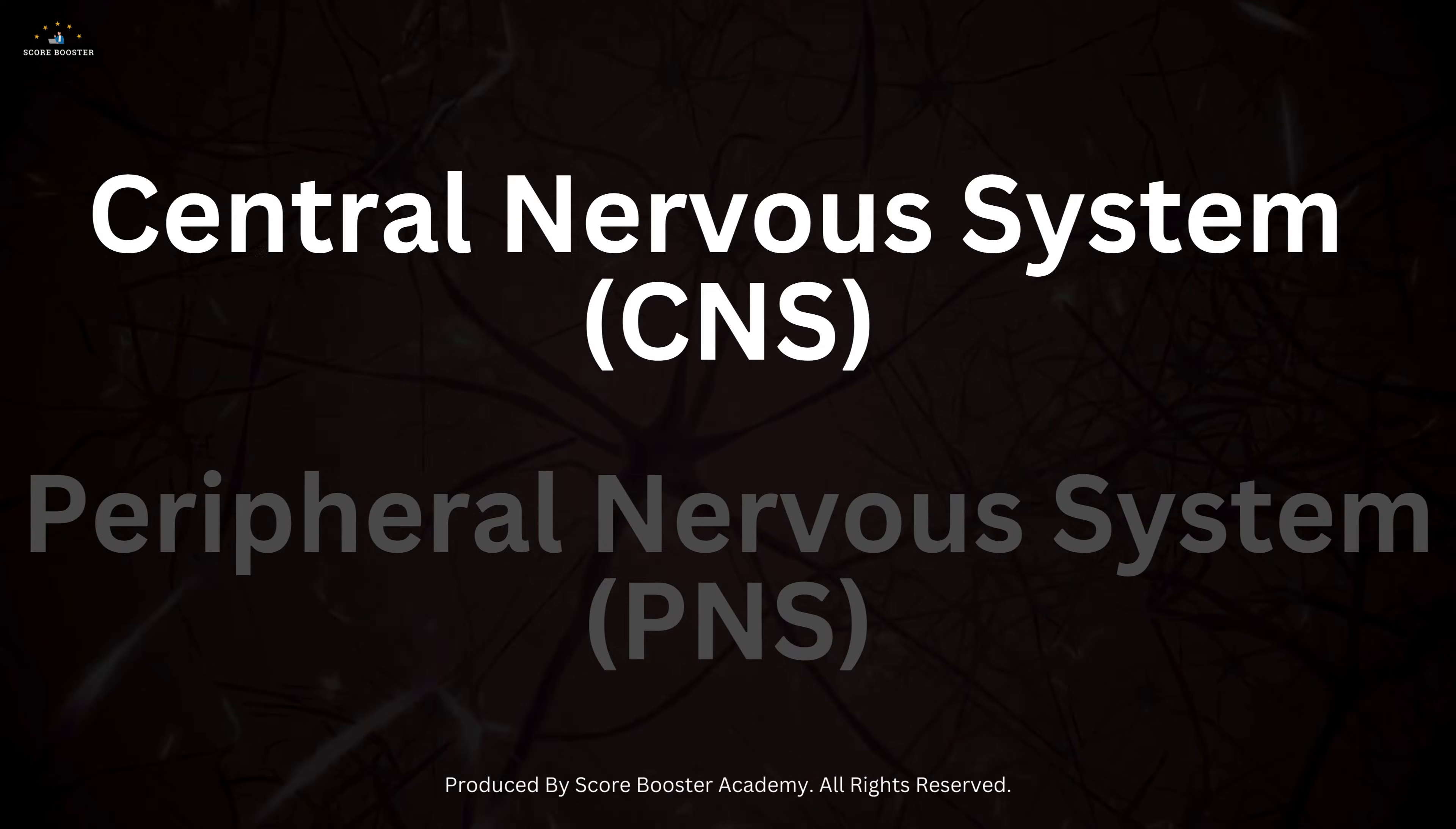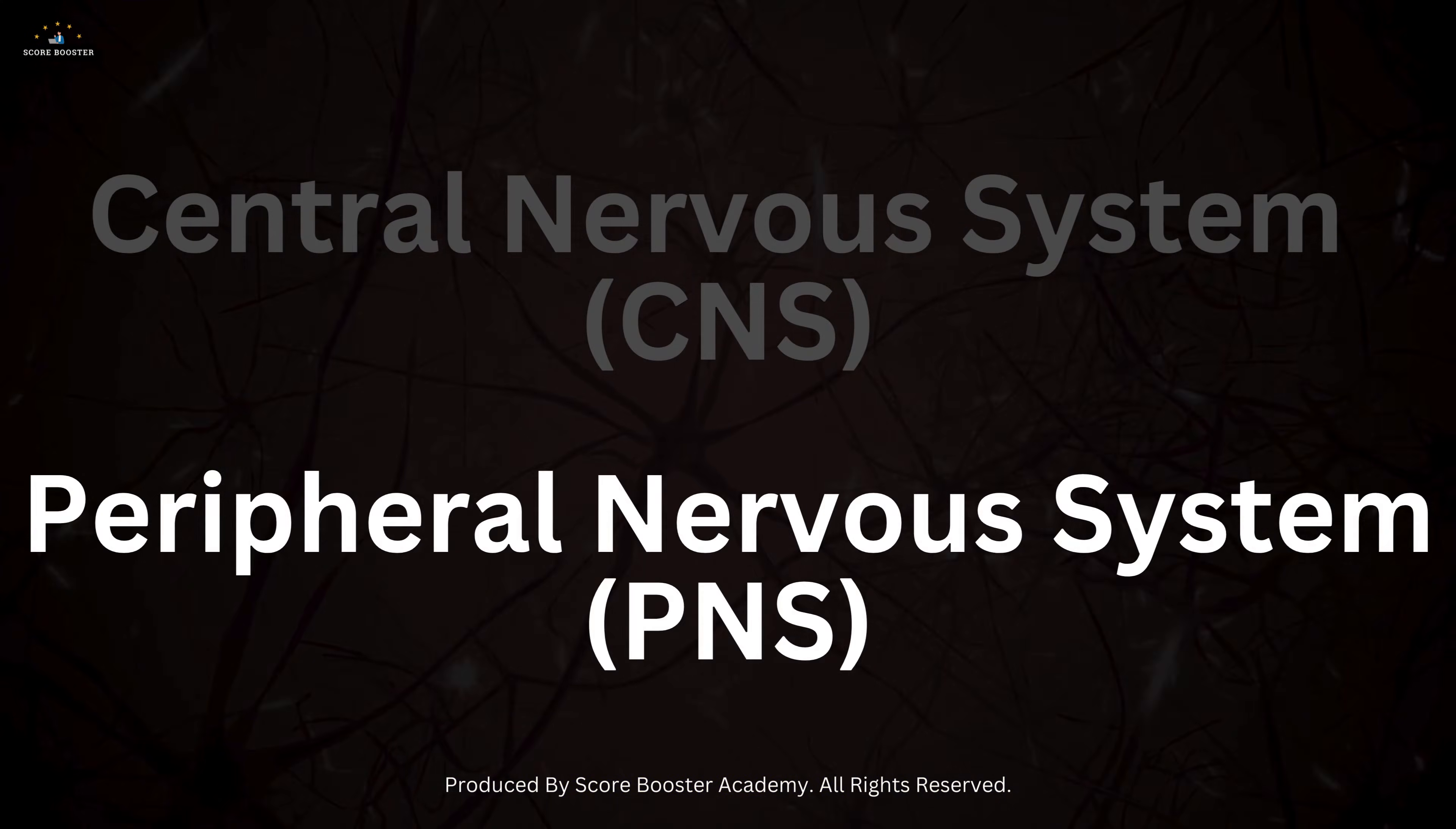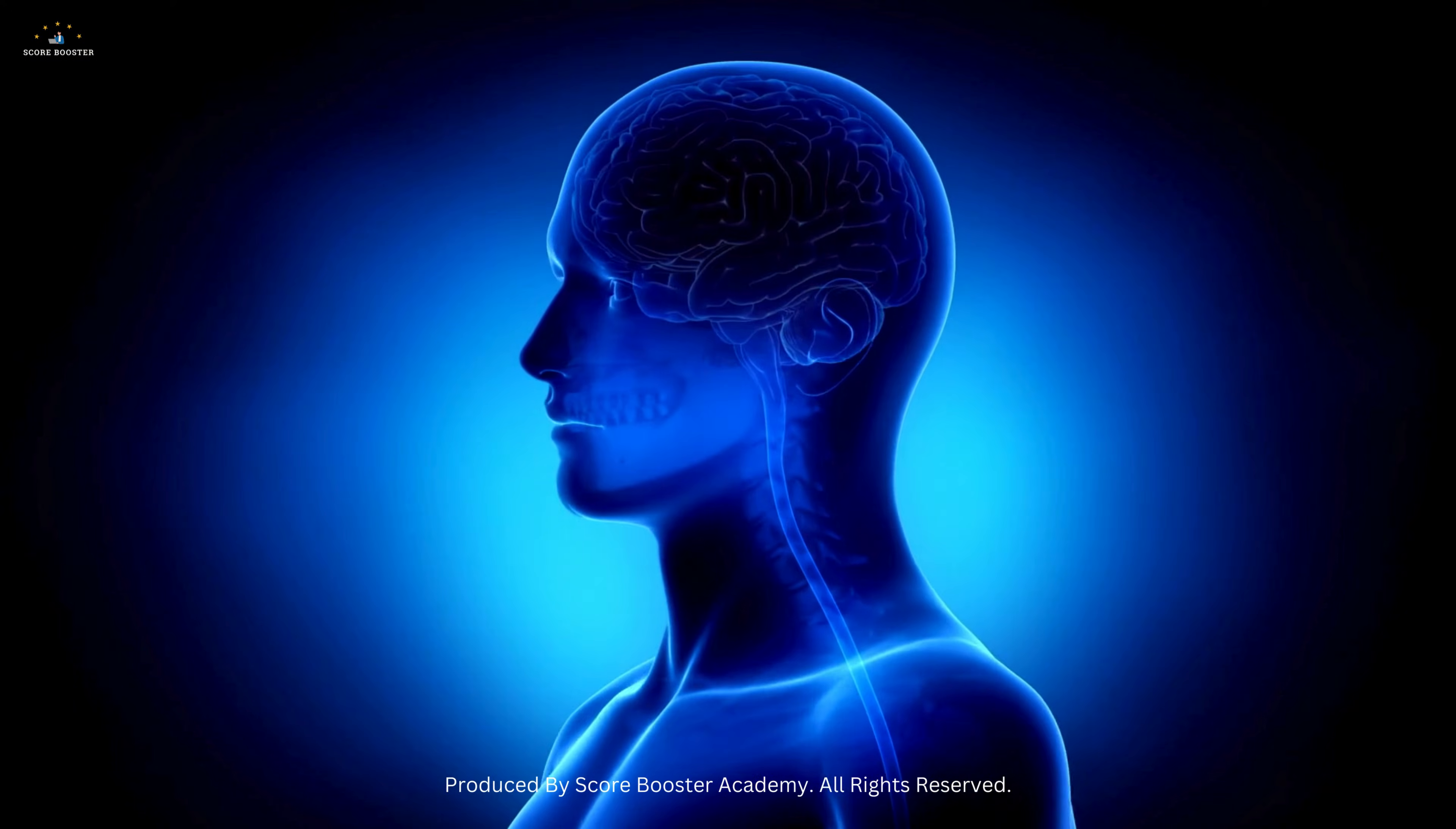The central nervous system, which includes the brain and spinal cord, acts as the control center, processing information and sending out commands. The peripheral nervous system consists of nerves that extend throughout the body, relaying messages to and from the central nervous system.